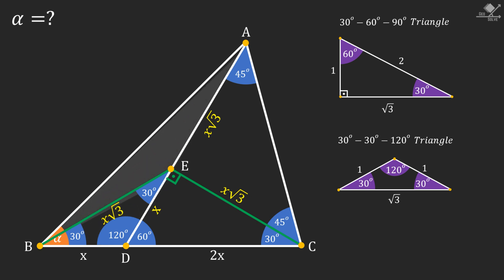Now let's focus on this shaded triangle. We see that two of its sides are equal to X root three, so its corresponding angles should also be equal and let's call them beta.